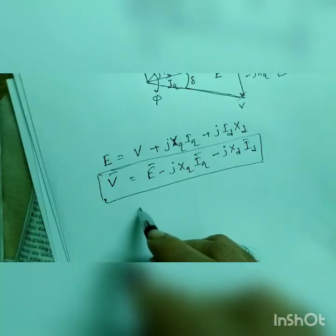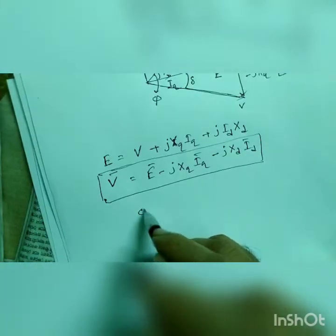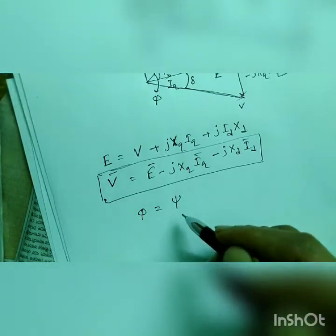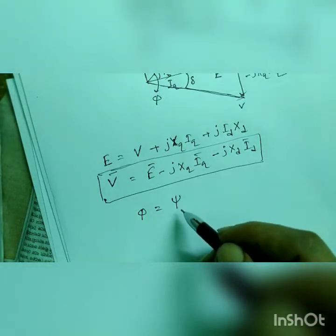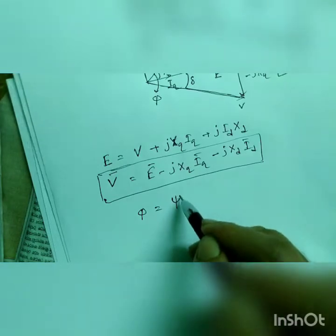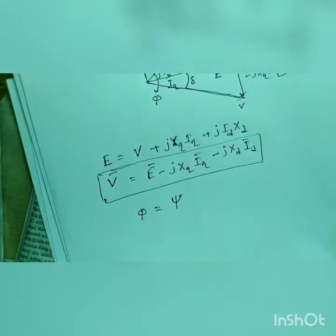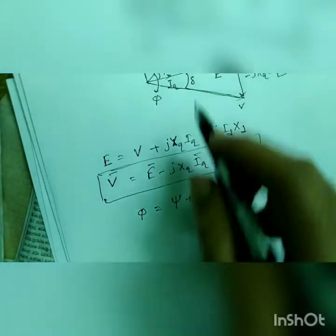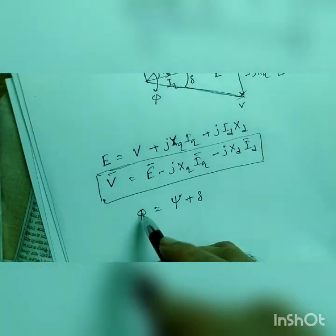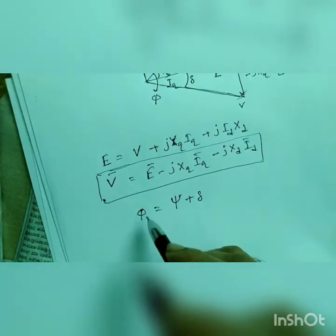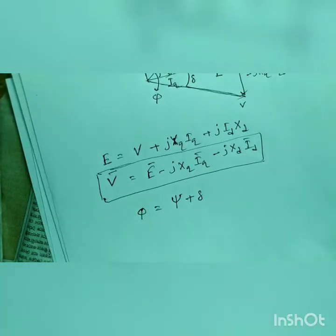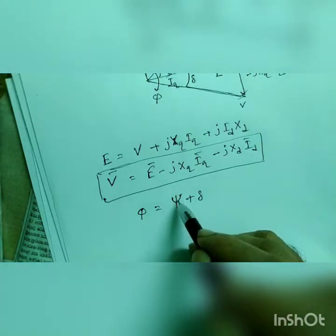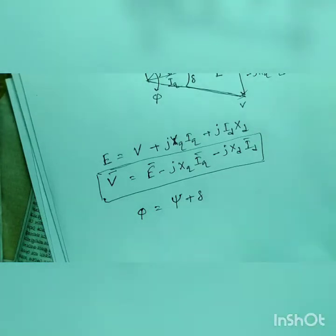Phi is equal to psi. Psi is internal power factor angle and delta is and phi is load power factor angle and psi is internal power factor angle, delta is load angle.